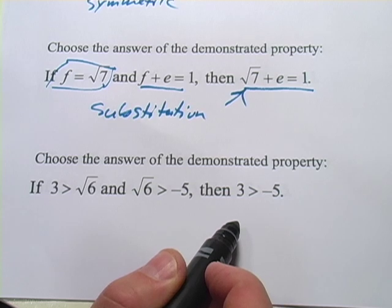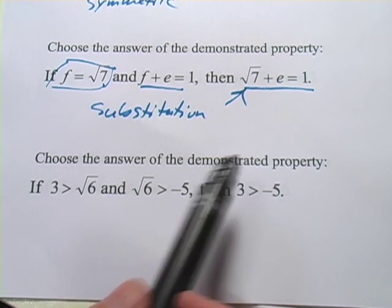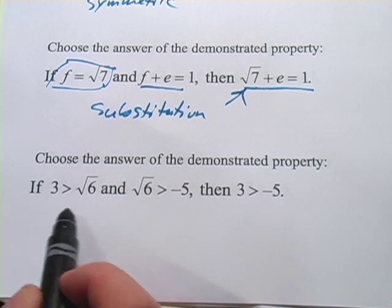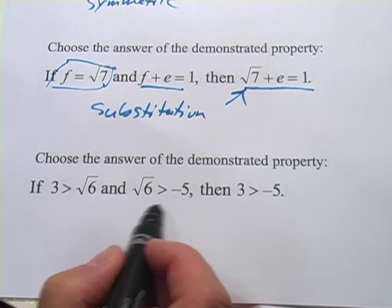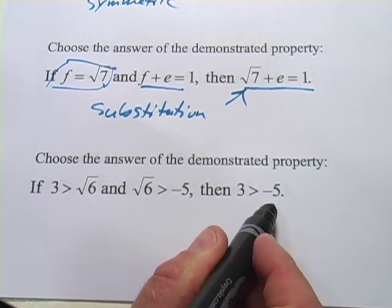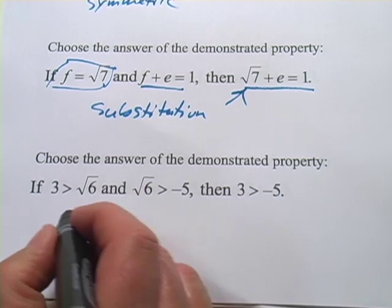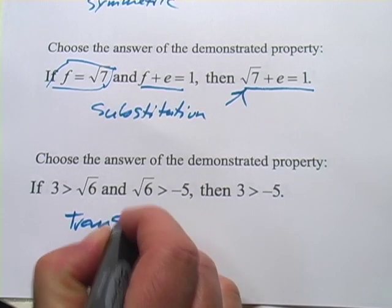And this one is going to be the transitive property. It's just like we say if x was greater than y, and y was greater than z, then x must be greater than z. So that is transitive.